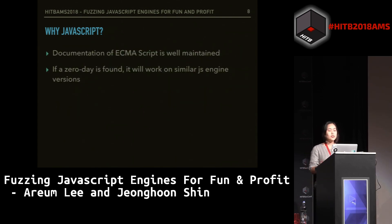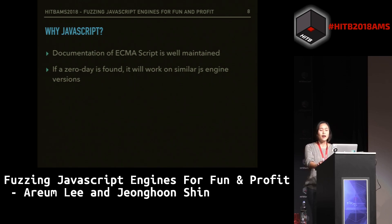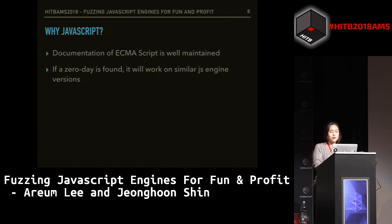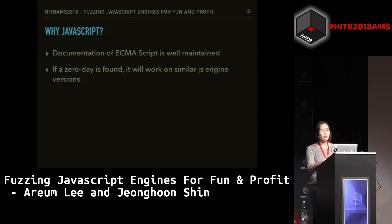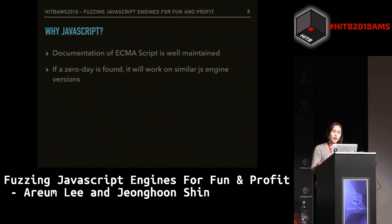Other reasons are that the documentation of ECMAScript is really well-maintained. ECMAScript is the standard for JavaScript, so if that is really well-maintained, you can refer to it whenever you want. If you can't understand anything in the JavaScript code, it's easy to look it up. Moreover, if a zero-day is found, it will work on similar JS engine versions. Like, if you find a bug in WebKit, it will work in Safari and it will work in PlayStation — if the JS engine version is similar, it will work.